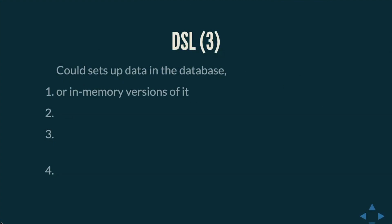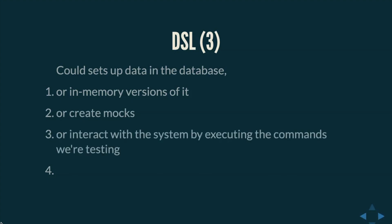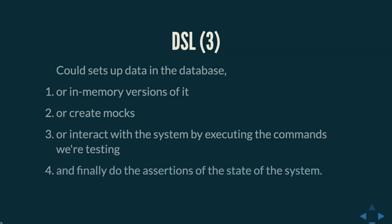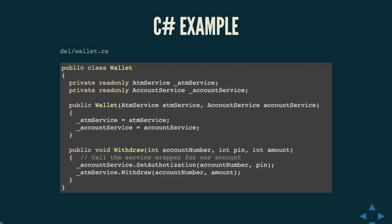We should always try to keep domain-specific languages as simple as possible but not simpler. Sometimes they can just be an object that interacts with the system under test, or we can augment the structure to make it work in our case. Domain-specific languages are really tied together with domain-driven design, which helps us connect the code with the ever-evolving and increasingly complex business model. We can use a domain-specific layer to set up data in the database, seed users, work with in-memory versions of the database, create mocks, or execute commands to test and exercise the system.